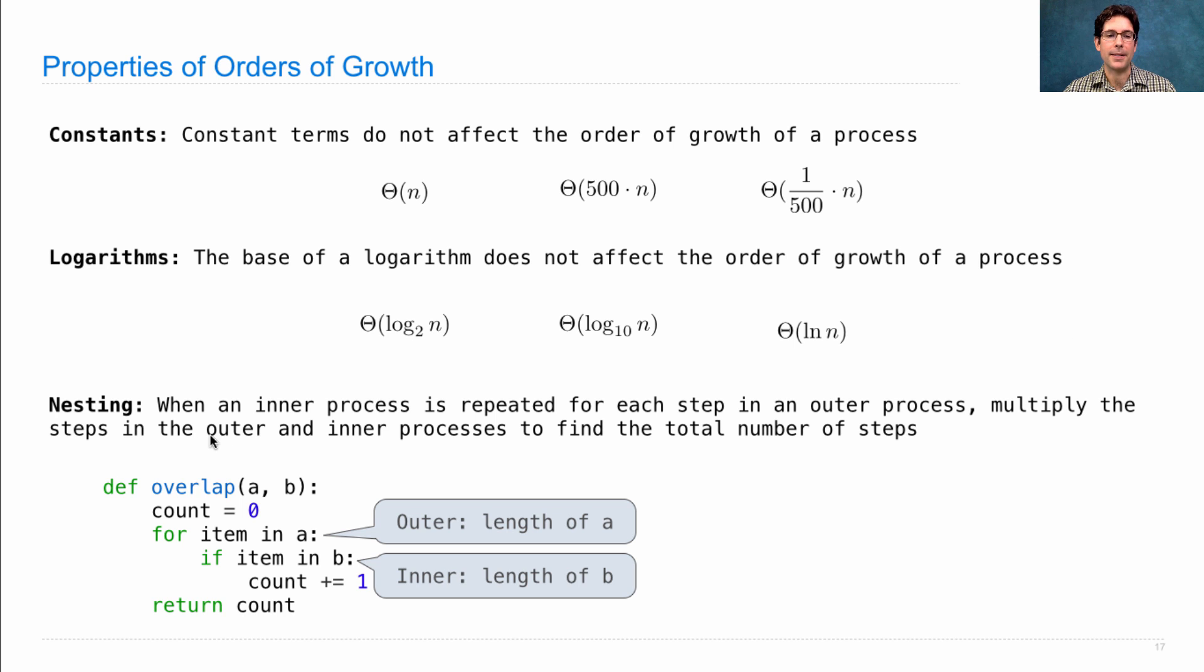So the outer process has length of A steps. The inner process has length of B steps. If A and B are both length n, then the overlap in total requires theta n squared steps, or n times n, because we multiplied.